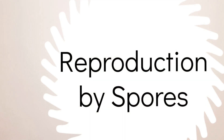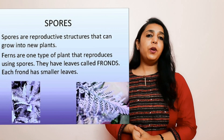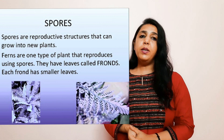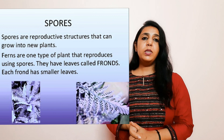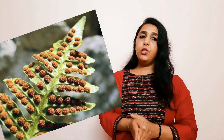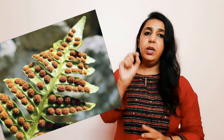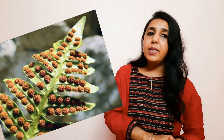Some plants have a special structure called spores. Many plants reproduce from spores only — ferns, liverworts, mosses, and even mushrooms are examples of this. These spores are actually tiny structures that look like seeds, but they are not seeds.